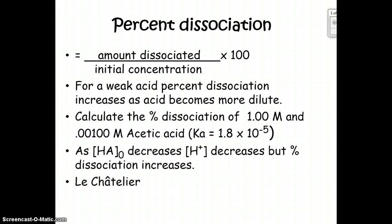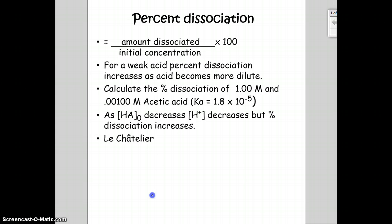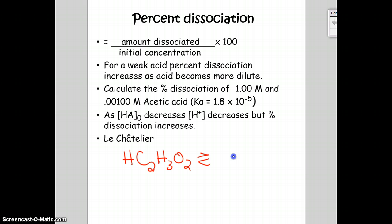Because acetic acid is a weak acid, we're going to have to do an ICE chart to determine the concentration. First we need to write the dissociation equation. Here is the formula for acetic acid, and when it dissociates it's going to make C2H3O2- and a hydrogen ion. We know we are starting with two different concentrations, so we're actually going to work these problems at one time.